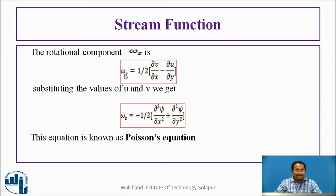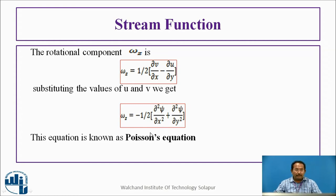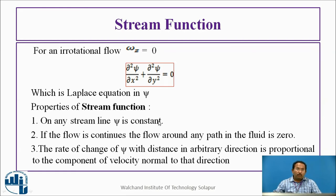For the rotational component in the z direction, the equation is: ωz = (1/2)(∂v/∂x − ∂u/∂y). Substituting the values of u and v in terms of ψ, we get: ωz = −(1/2)(∂²ψ/∂x² + ∂²ψ/∂y²). This equation is a Poisson's equation. When the rotational velocity with respect to the z direction is zero, this reduces to the Laplace equation with respect to ψ.